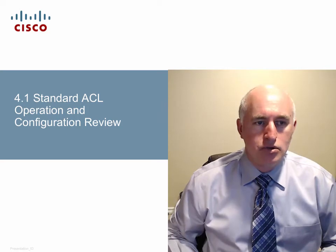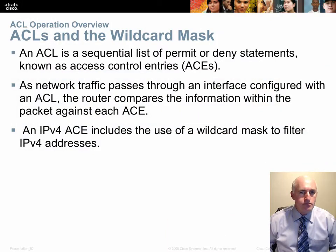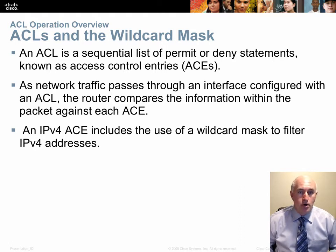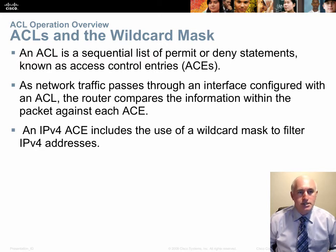Looking at standard ACLs, which are not commonly used much anymore, but it's a good way to get started with access control lists. It's a sequential list of permit or deny statements, and we call those ACEs. Each entry in an ACL is called an ACE, and there are really three types: a remark, a permit, or a deny. Remarks are helpful for humans who need to read the ACL later.